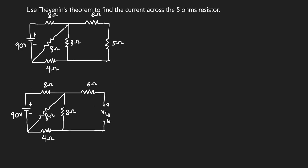I leave the right part and focus on the left part. For the left part, current will flow and then split into I1 and I2. I2 will not flow through the 6 ohms because of the open circuit — I2 will flow through the 8 ohms and then through the 4 ohms and back to the source.